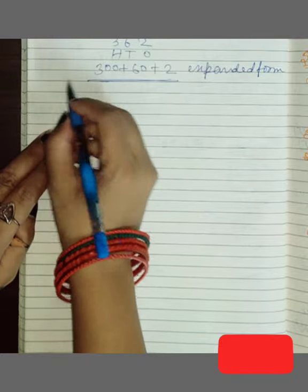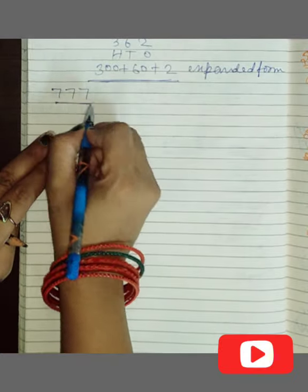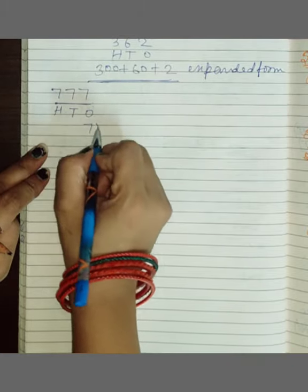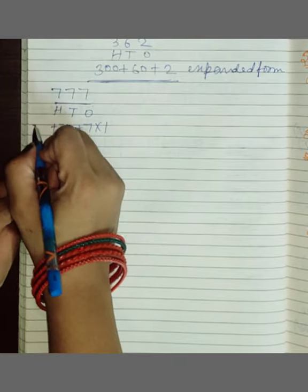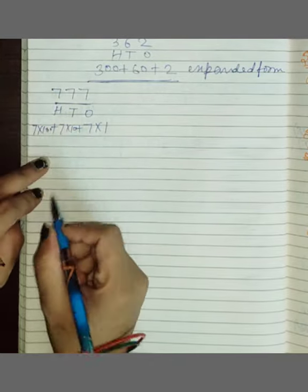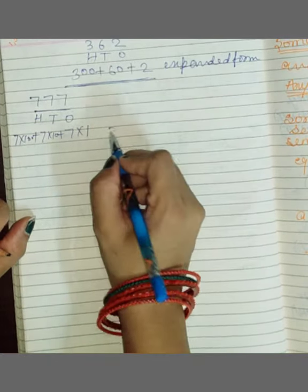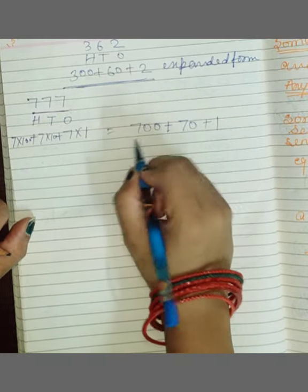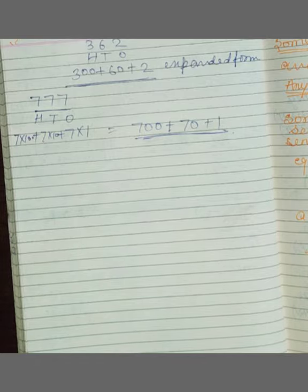Okay, let's see the number 777. Label it ones, tens, hundreds. 7 ko 1 se multiply, 7 ko 10 se multiply, 7 ko 100 se multiply. So what happened? 700 plus 70 plus 7. This is expanded form. I hope you can see the expanded form.